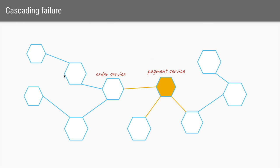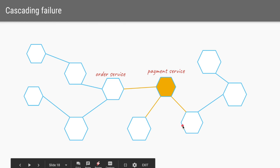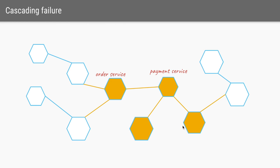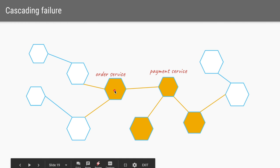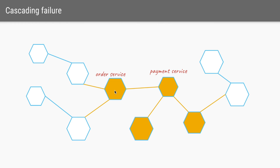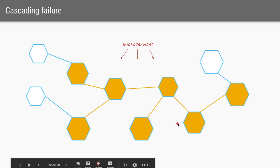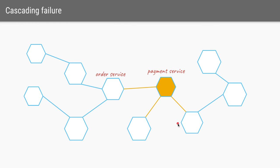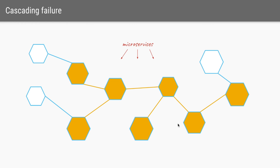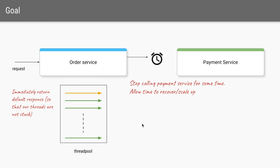A failure in the payment service has caused a failure in the order service. In a system with many microservices talking to each other, one slow service can cause problems for many others. If the payment service is called by three other services, any slowness there creates issues for all three callers — and since those three services slow down, it cascades further to all services calling them. A problem in a single service has caused a cascading failure across the system.